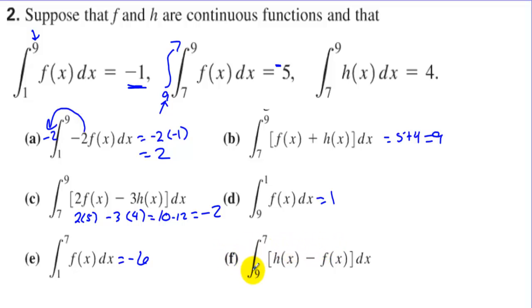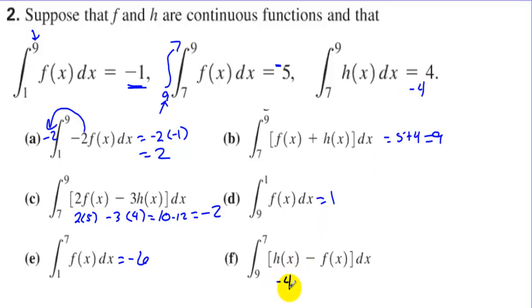Letter F: integral from 9 to 7 of h(x) minus f(x). We go from 7 to 9 to 9 to 7, so we use negative 4 for h(x), then minus the integral from 9 to 7, using negative 5 for f(x). We have negative 4 plus 5 — the answer is 1.